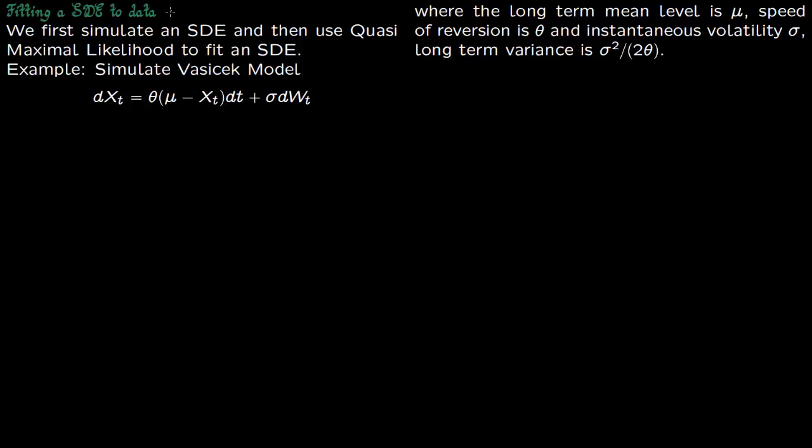Now we want to fit a stochastic differential equation to data. So what we are going to do essentially is we are going to simulate some data and then try to fit a stochastic differential equation to it. So the method which we are going to use is quasi-maximal likelihood estimation, and this is a standard technique of maximum likelihood estimation which tries to fit a given differential equation to data.